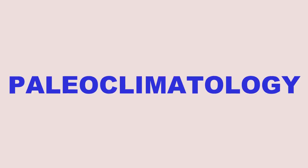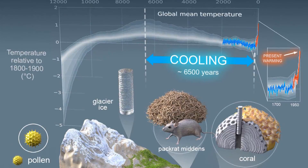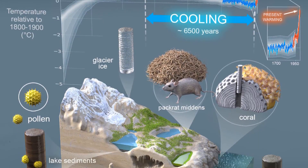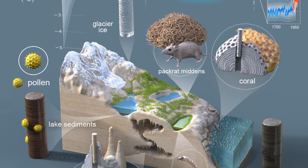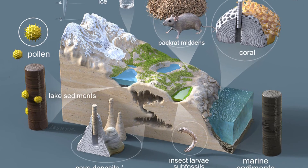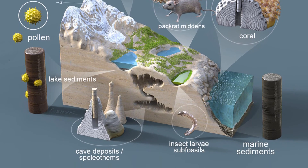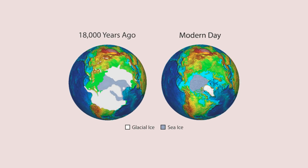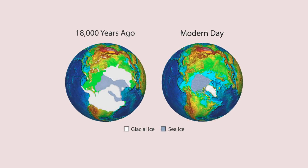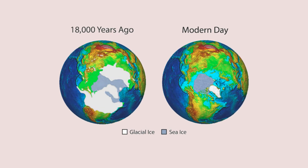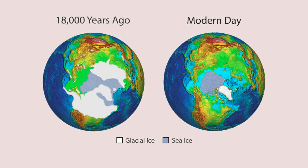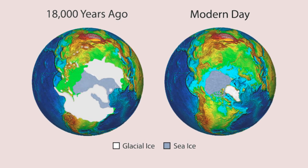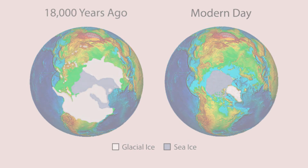Paleoclimatology — this involves studying proxy data such as tree rings, ice cores, ocean and lake sediments, and coral reefs. They provide information about past temperature, precipitation, atmospheric pressure, and other climatic conditions.